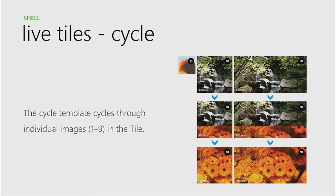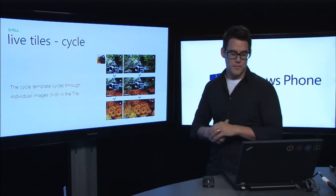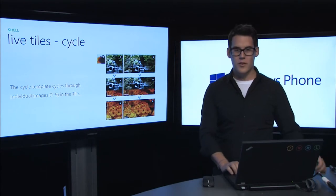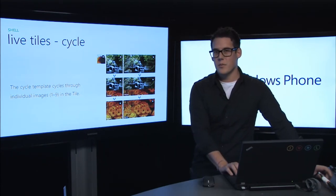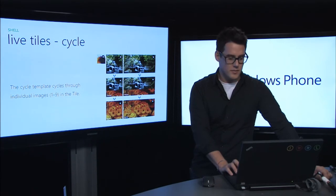The Cycle template cycles through individual images from a gallery you've created — one through nine images on the tile. If you have multiple images and want to feed through them in a beautiful visual way, it's canned for you, super available, and the animations between images are already controlled. It's a beautiful and simple way to make your application feel like a native part of the Windows Phone 8 ecosystem.